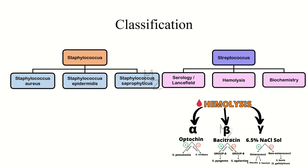Alpha hemolytic bacteria are subdivided on the basis of optochin sensitivity into strep pneumoniae and viridans streptococci. Beta hemolytic bacteria are further classified based on bacitracin sensitivity into group A strep pyogenes and group B strep agalactiae.